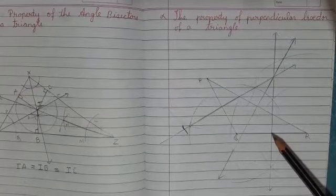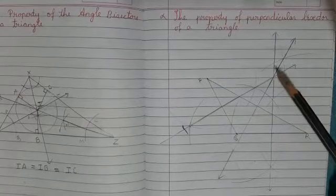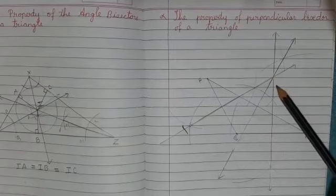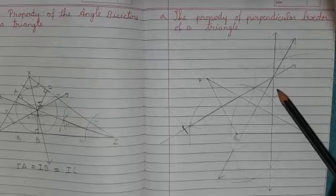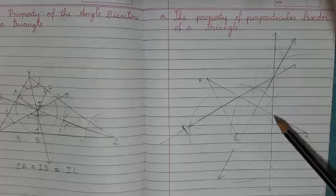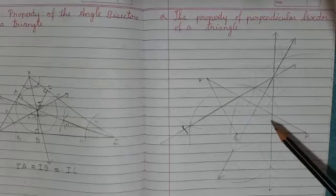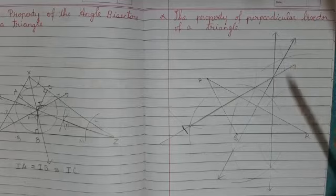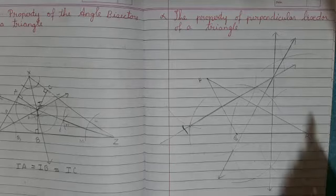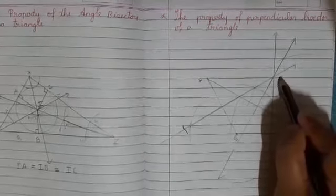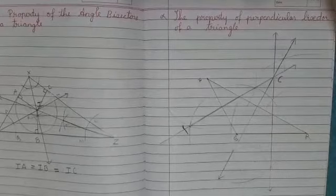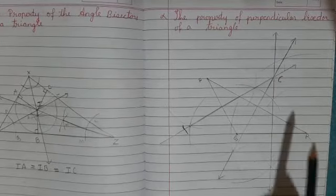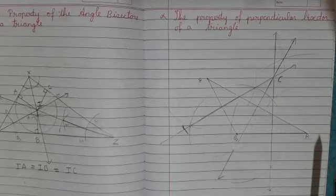Now if you observe the diagram, you can see that all three perpendicular bisectors are joining or intersecting each other at a point — and this point is outside the triangle. This tells us that these lines are concurrent. And this point is called the point of concurrence, which is named as C. In angle bisectors the point was named I, and in perpendicular bisectors it is named as C — but both are points of concurrence.